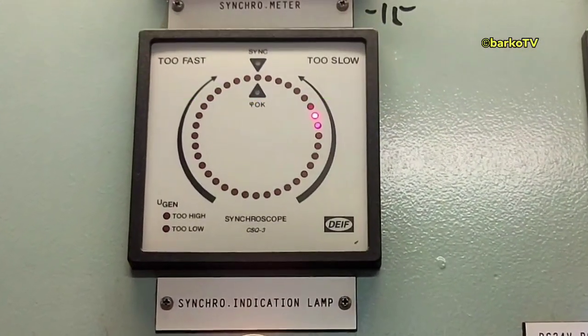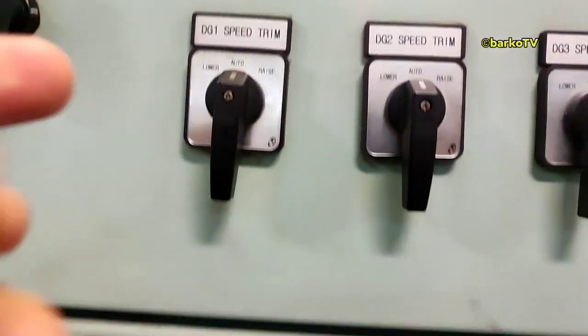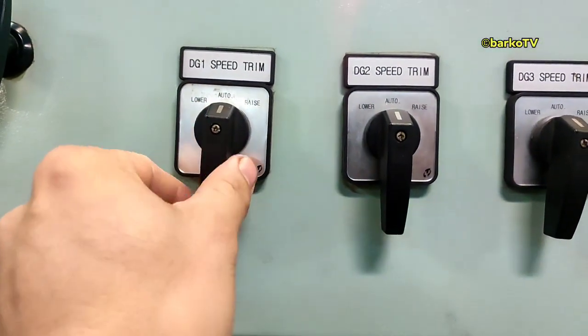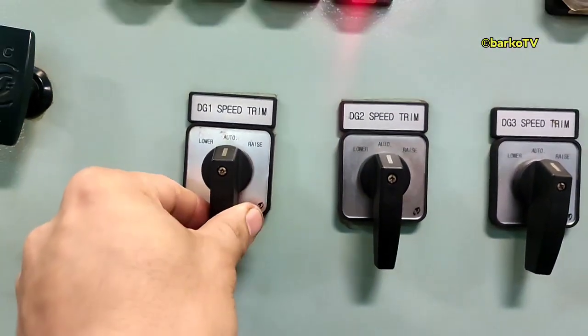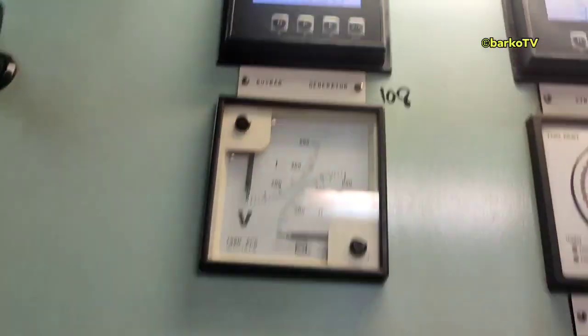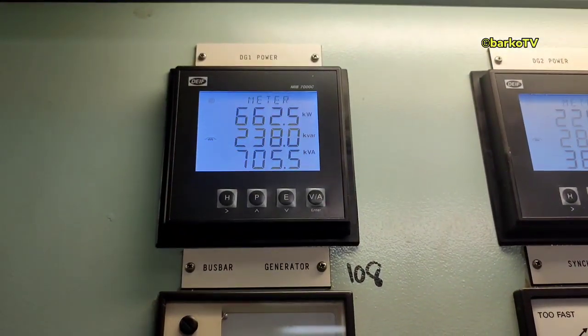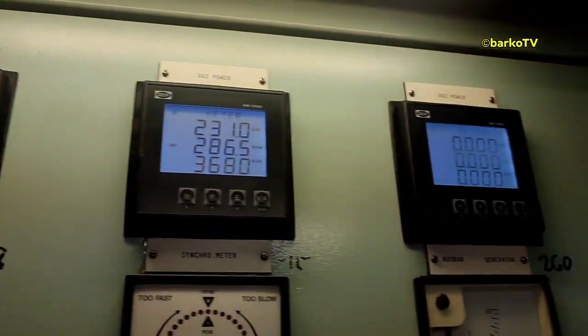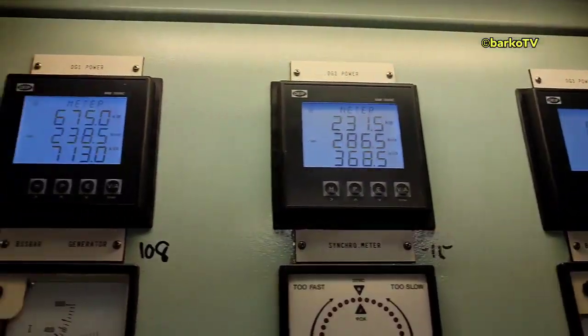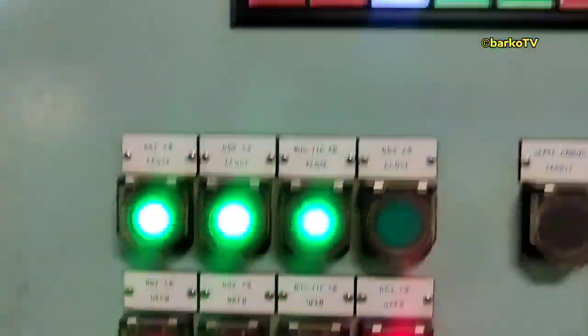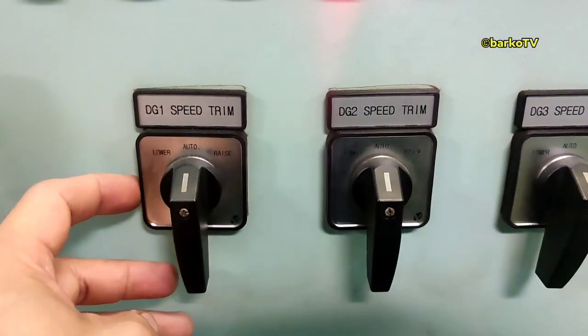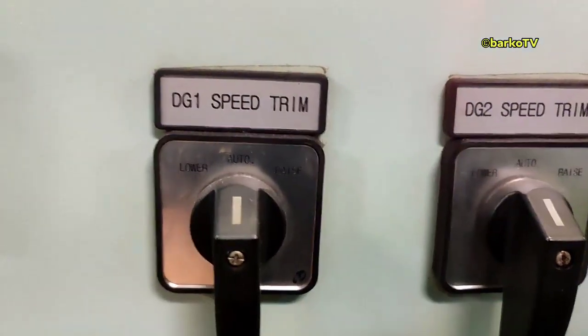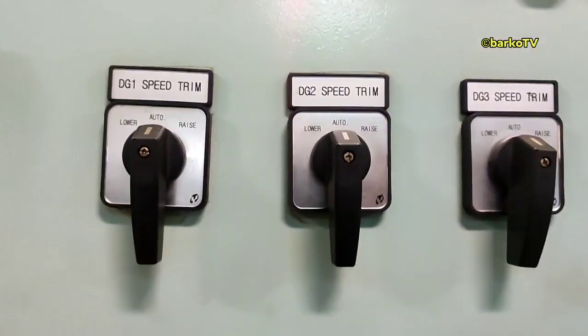First is DG1 speed trim. Why trim? That is for the governor - lower and raise. Lower means decrease the speed, and raise means increasing the speed. That is controlling your governor, the one component that controls your governor. If it is in manual, raise is increasing speed and lower is decreasing speed.